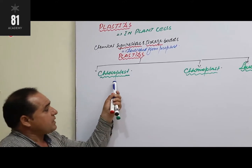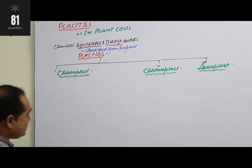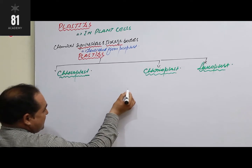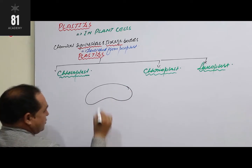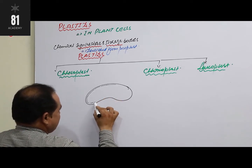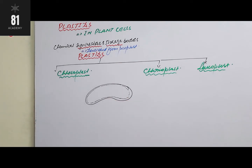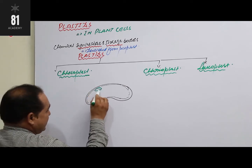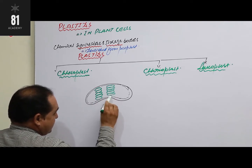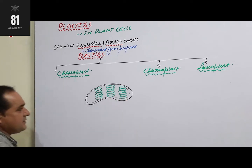Now when we talk about chloroplast, its structure is as follows. Chloroplast is a double membranous cytoplasmic organelle found in plant cells. Inside the chloroplast, chlorophyll molecules are arranged in stalks and bunches.